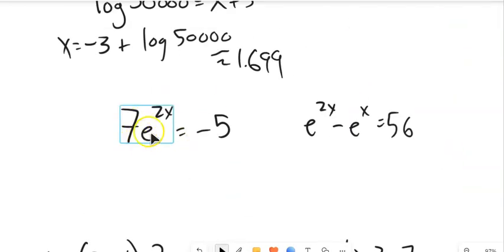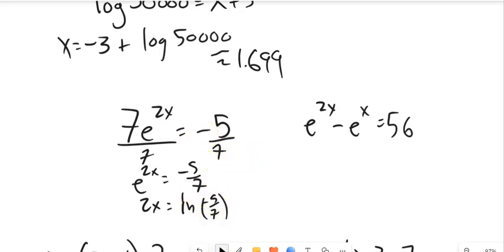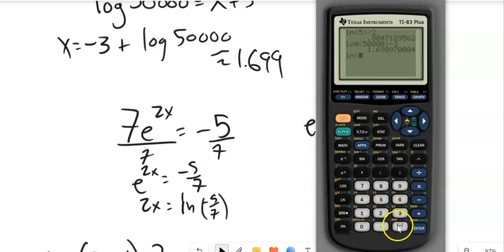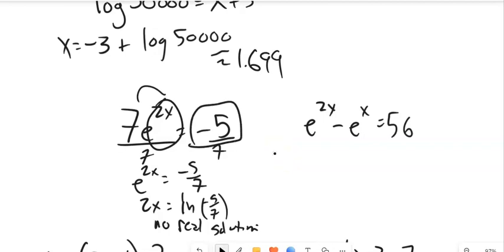This one: 7 times e to the 2x equals negative 5. I divide everything by 7, getting e to the 2x equals negative 5/7. I might see a problem right off the bat, but I'll trudge on and apply natural log: 2x equals natural log of negative 5/7. But natural log of a negative number causes trouble — I get a non-real answer on my calculator. So: no real solution. E to any power is positive, and 7 times positive can't equal negative 5.